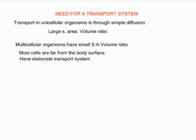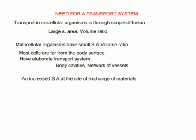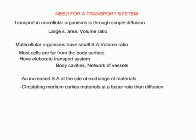Therefore, multicellular organisms need an elaborate transport system made up of body cavities and/or a network of vessels such as arteries and veins. An elaborate transport system has an increased surface area at the sites of exchange of materials — such sites include the lungs and gills, where oxygen is absorbed, and villi where food nutrients are absorbed along the alimentary canal. It is also a system whereby the circulating medium carries absorbed substances at a faster rate than diffusion.